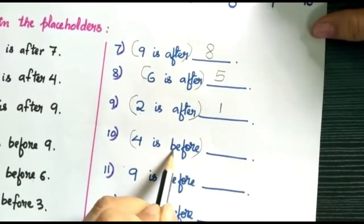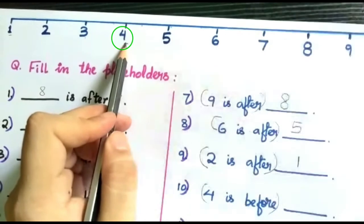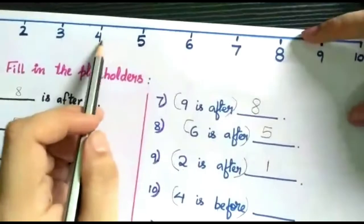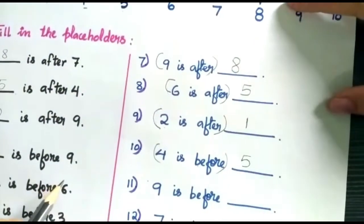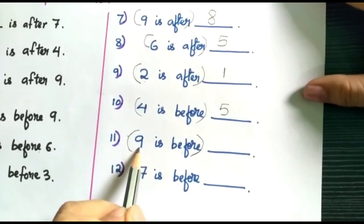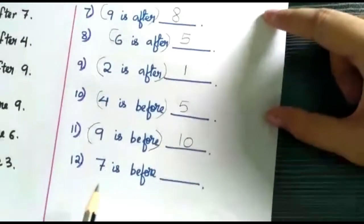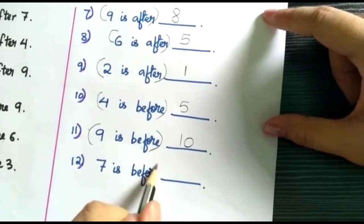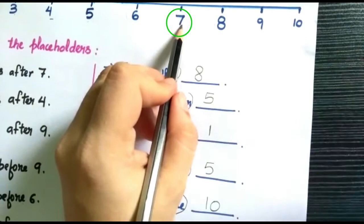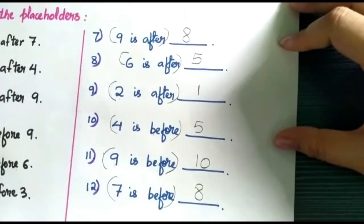Alright children, now number ten: four is before dash. Four is before — matlab four jo hai pehli wali number hai, four is already the before number. It's already before number five, so we'll write here five. Now number eleven: nine is before dash. Nine is already the before number — pehli wali number hai. So the after number: after nine is ten, so we'll write here ten. And the last question, twelve: seven is before dash. Seven is already a before number, so the after number of seven is eight. We'll write here eight. Children, I'm sure all of you are clear now.